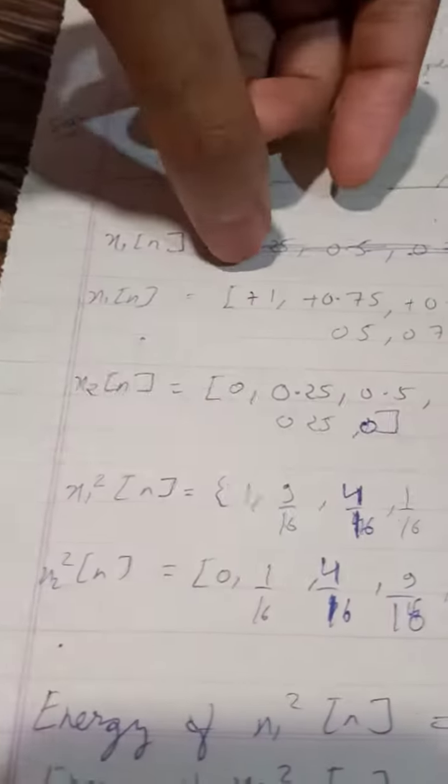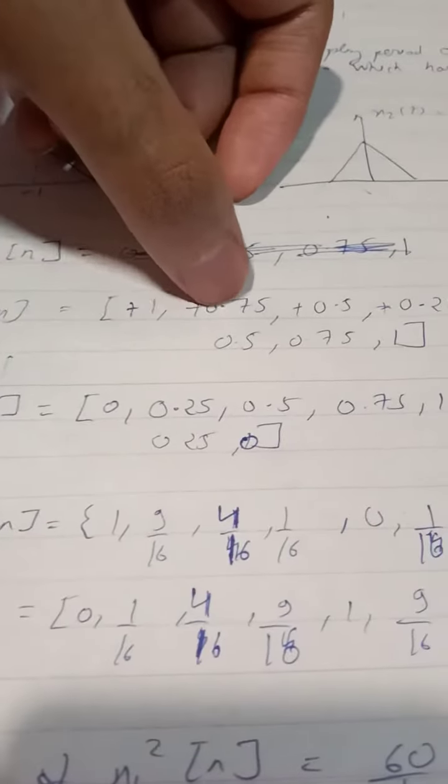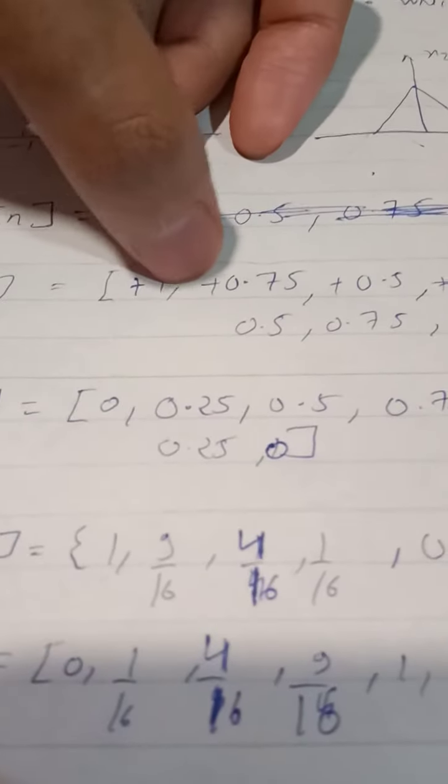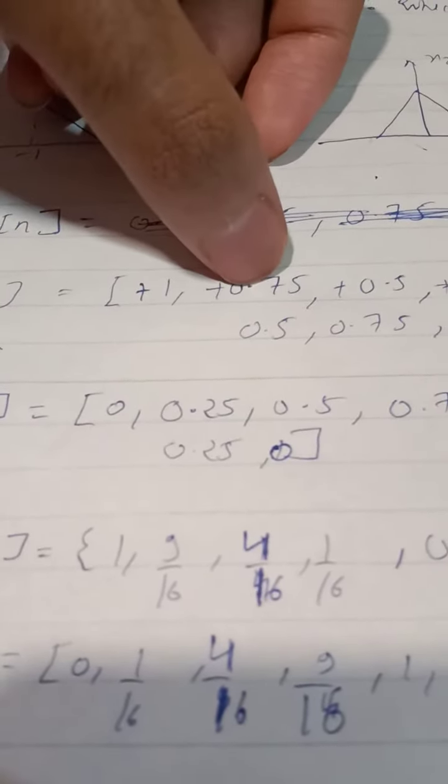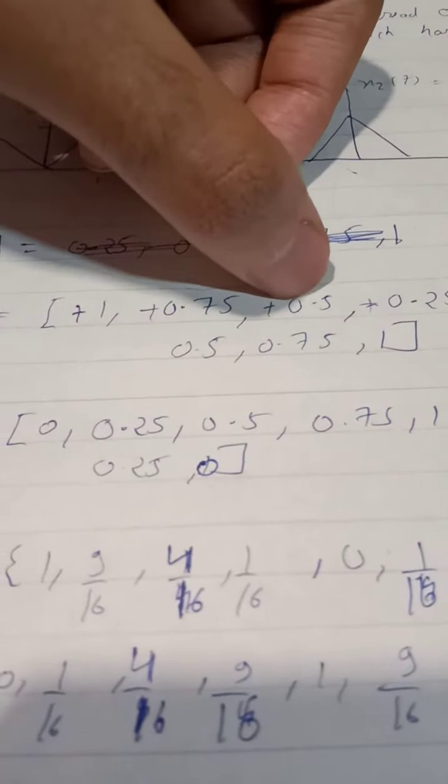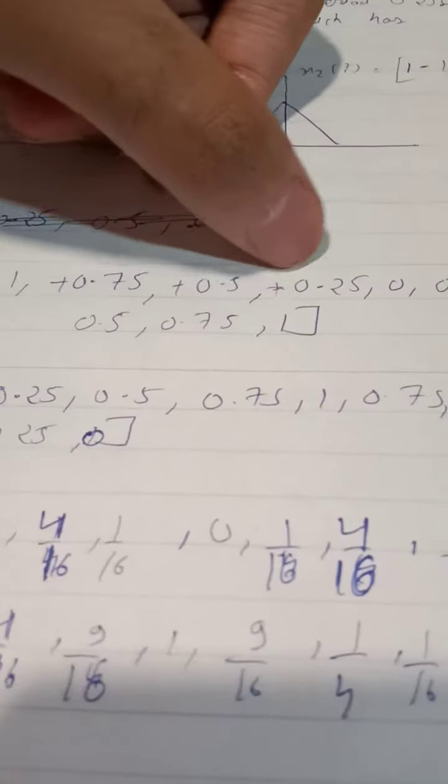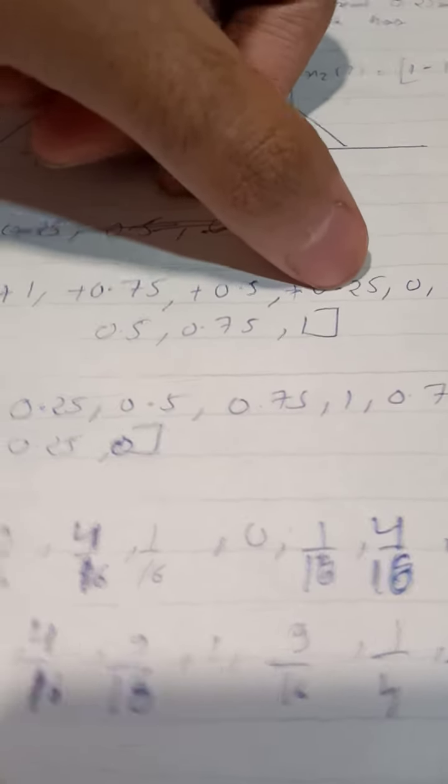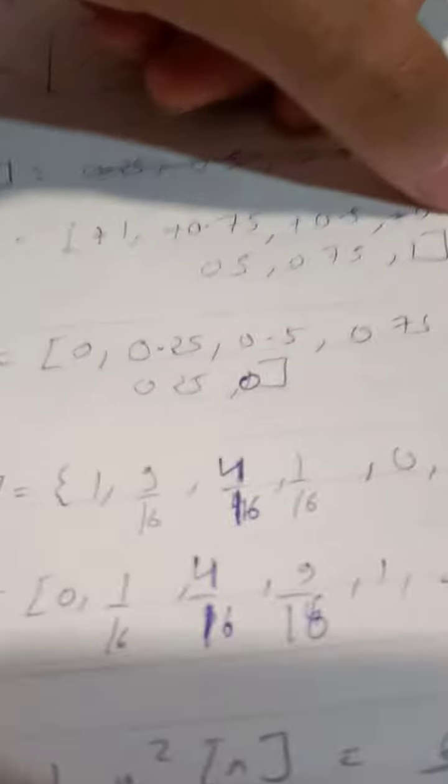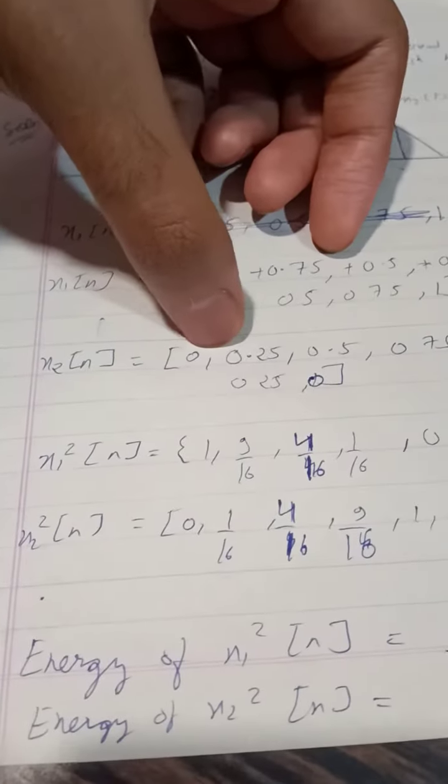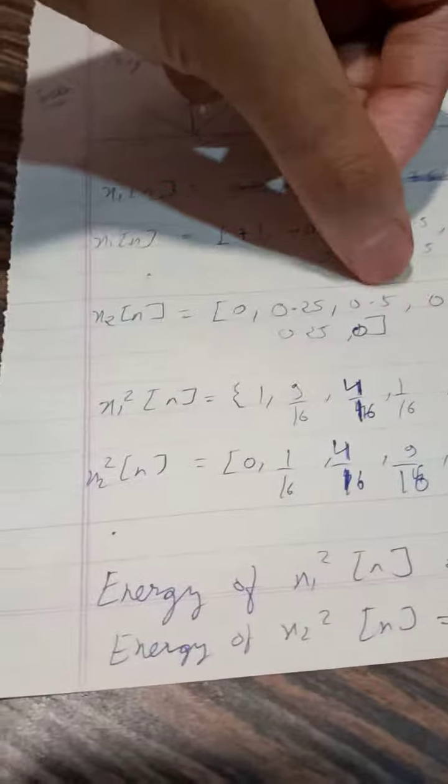Now to calculate their energy we have to square all these individual terms. So 1 square is 1, 0.75 square is 9 by 16, then 1 by 2 square is 1 by 4 and 1 by 4 square is 1 by 16 and so on. Similarly you have to square all these terms of x2n also.